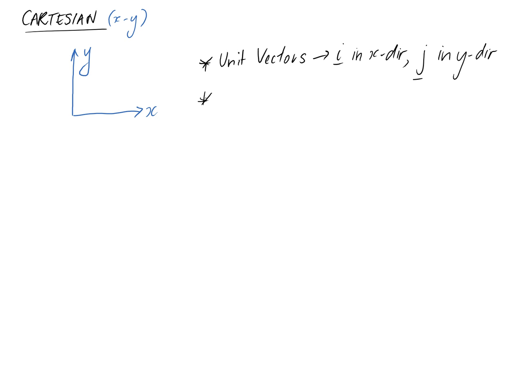If we want to describe velocity and acceleration in the Cartesian system we can do so using the following equations. Velocity is simply equal to x dot i plus y dot j. So x dot is essentially how fast you're moving in the x direction and y dot is how fast you're moving in the y direction.